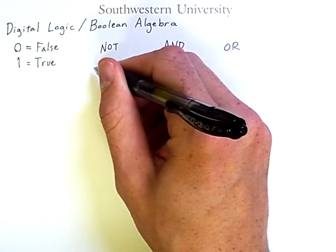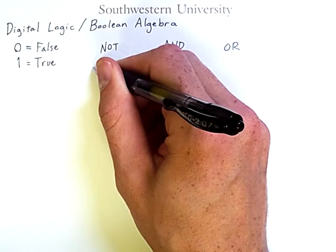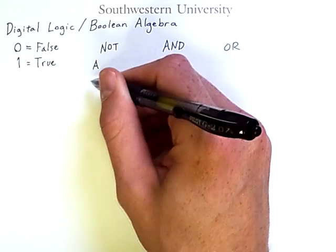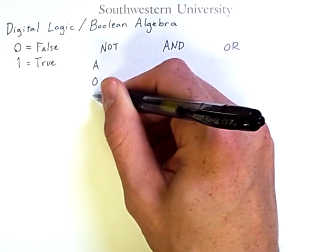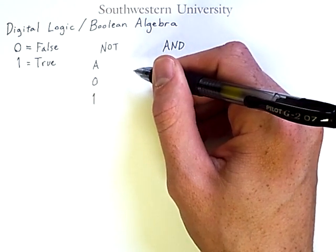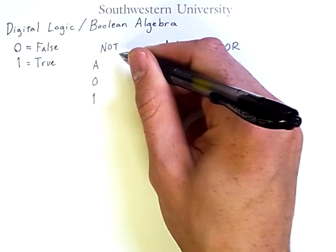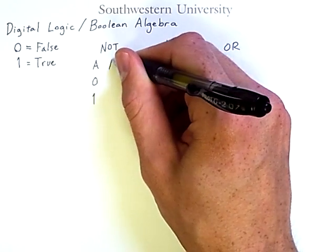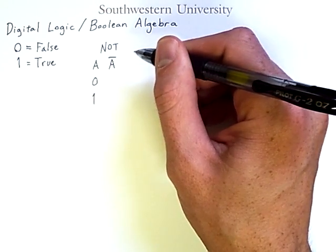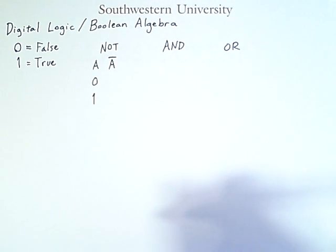Now, if I have a Boolean variable A that can take on a value of zero or one, then I will denote the negation of A, or NOT A, as A with a bar over it. This symbol may be different from what you have seen in other classes or in programming languages, but it is what we will use in this class.